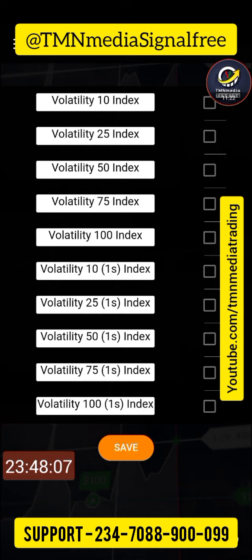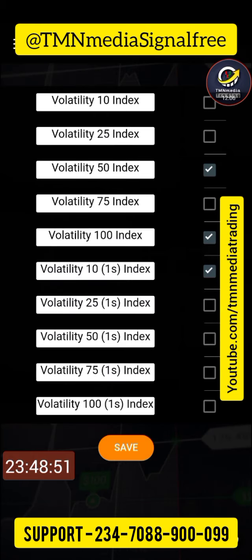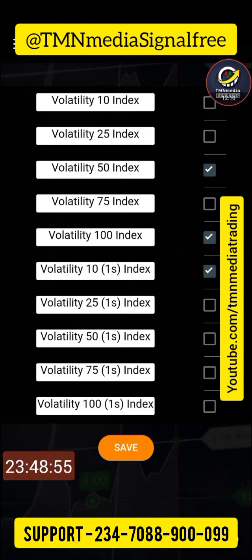Once payment is confirmed, select the indices you want to receive signals on. You only have the opportunity to select three for the free trial. For basic you can do five; for premium you can do all of them. I recommend: 10X Index, 100 Index, and 50 Index. You can select any three you want — 10, 50, 75, or any based on your own decision.